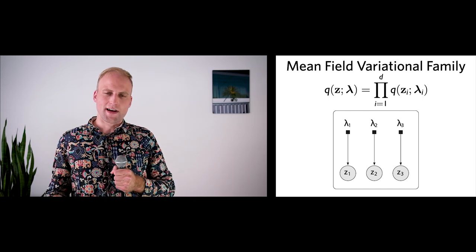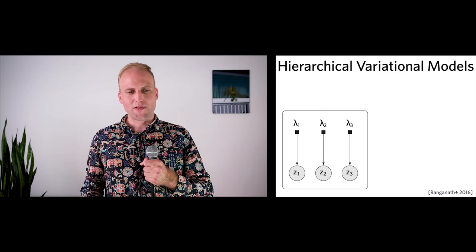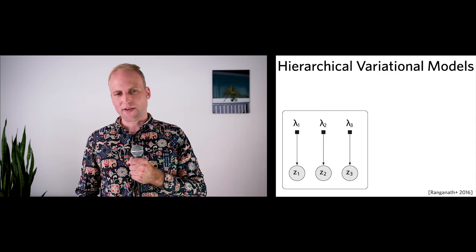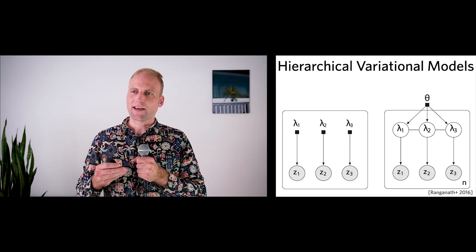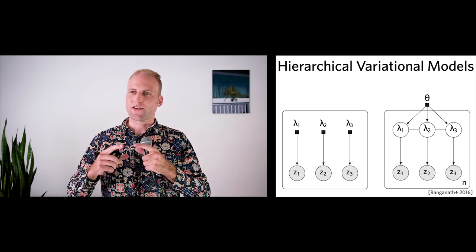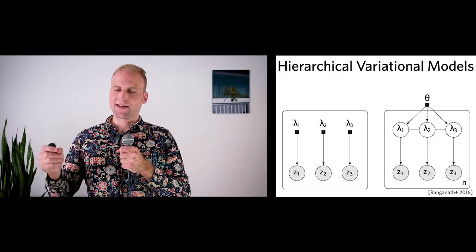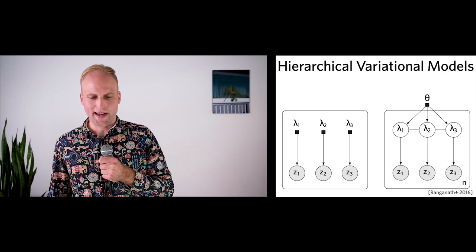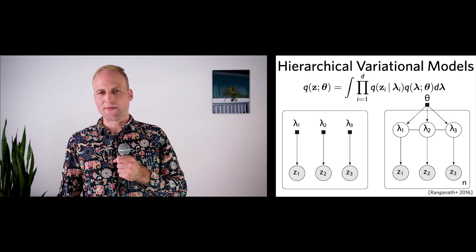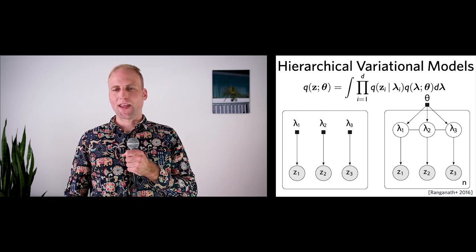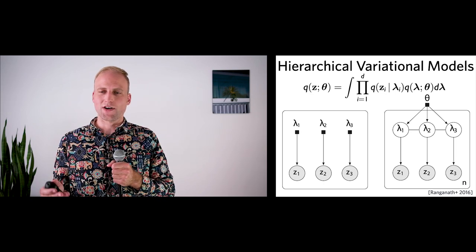We can use work on building hierarchical variational models, inspired by hierarchical probabilistic modeling. We start with the mean field variational family and place priors on the variational parameters lambda. This encodes additional structure into the variational inference family — one way of increasing the size of the variational family in the hopes of finding better approximations to get closer to p of z. The distribution for the hierarchical variational model is a mean field family q of z_i conditional on lambda_i, with a variational prior q of lambda parametrized by theta, integrated over the variational parameters.